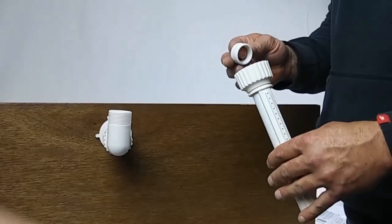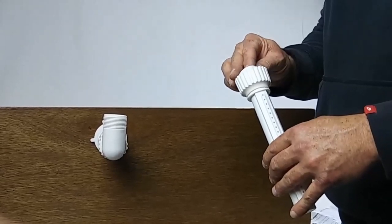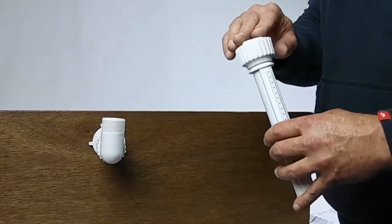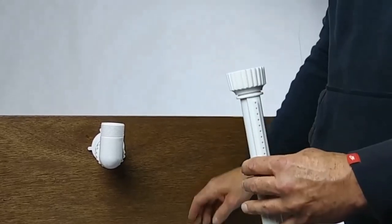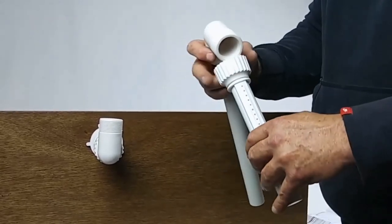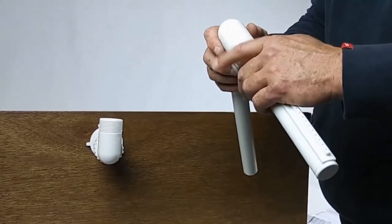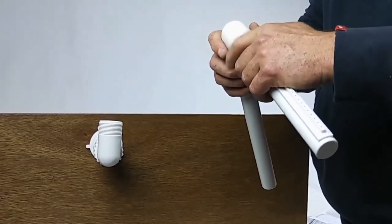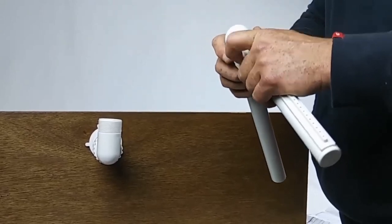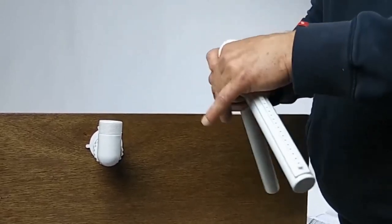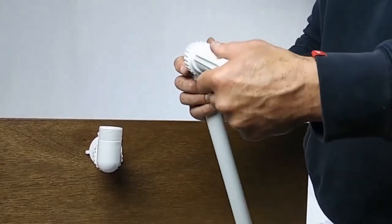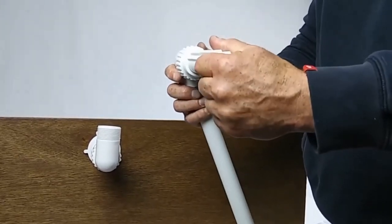Next we're going to attach the spray head to the riser, being sure that our rubber o-ring seal is pushed into place. Again we're going to attach this to the riser hand tight, snugging it up tight enough to hold the spray head in position, yet able to adjust it so we can achieve the direction that we would like.